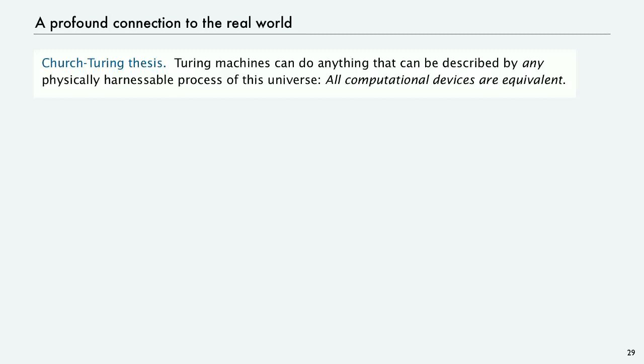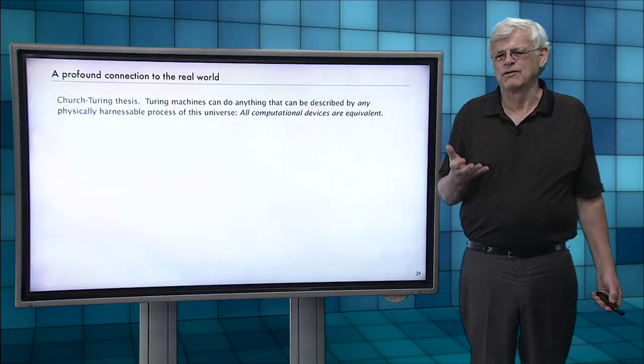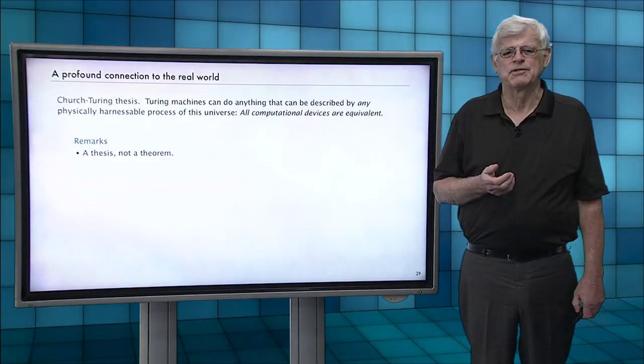And what Church and Turing articulated is that anything that we can do in this universe is going to be equivalent. That a universal Turing machine, it can simulate a universal Turing machine, universal Turing machine can simulate it, so they're all equivalent, all compute the same thing.